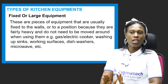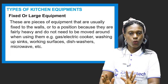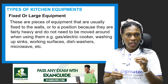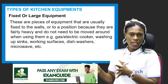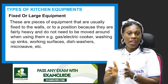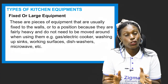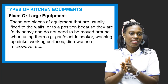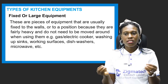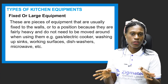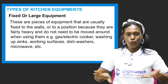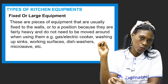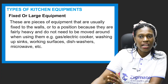We have fixed or large equipment — pieces of equipment usually fixed to the walls. You have your working surfaces, your sinks, your gas cookers. Most of your gas cookers have been in the same position ever since you were young and they haven't been moved. Your washing-up sinks, working surfaces, and dishwashers — where they are placed, that's where they stay. These are called fixed or large kitchen equipment.